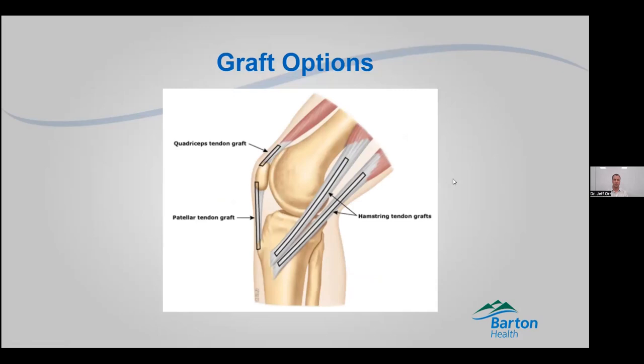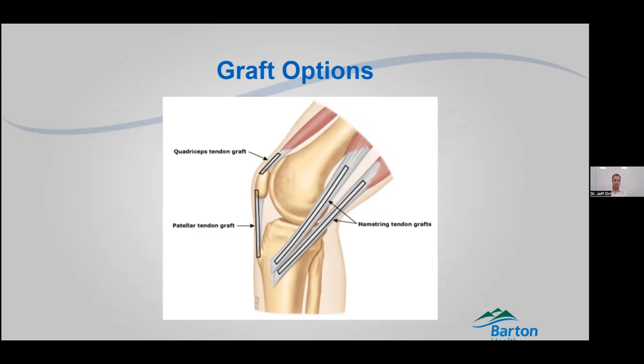So how do we do this? There are multiple different ways to take care of these. The main option is to use your own tissue — an autograft — or to use cadaver tissue — an allograft. If you're using your own, there are three main areas: you can take it from your quad tendon, your patellar tendon, or your hamstring tendon. Personally, I like using the quad tendon graft. If you're using cadaver tissue, you can also use tibialis anterior, tibialis posterior, or Achilles tendon. I still like using the quadriceps tendon graft even with cadaver tissue — I think it's just a good graft to use.